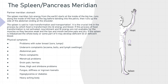The physical symptoms associated with imbalance in this area are problems with the outer breast and sore lumps, underarm complaints such as eczema, boils, and lymph swellings, abdominal pain, pelvic complaints, menstrual problems, groin pain, hernias, knee, thigh, and shin bone problems, fungus, stiffness or ingrown toenails, hypoglycemia or diabetes, and heavy aching body.